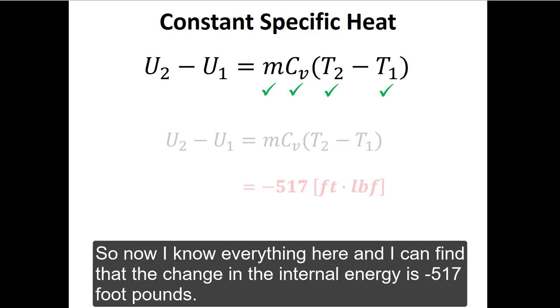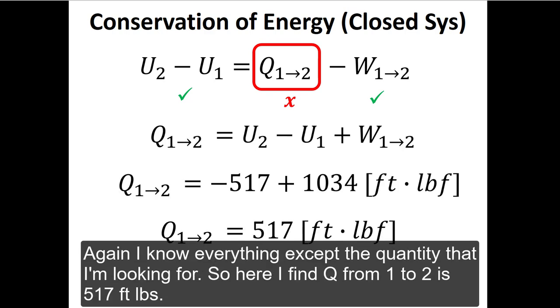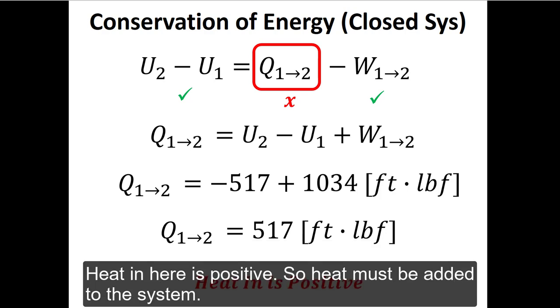So now I know everything here and I can find that the change in internal energy is negative 517 foot-pounds. I can use this in my first law to find the heat transfer from state one to state two. Again, I know everything except the quantity I'm looking for, so here I find that Q from one to two is 517 foot-pounds. Heat in here is positive, so heat must be added to the system.